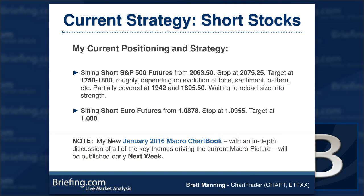Here's my current position: short S&P futures from 2063.50 in two entries following the Fed. My stop is back above 2075, and I'm waiting to reload. I've already taken a little bit off. I'm also sitting short the euro — the basis being that the Fed is not going to back off from their hawkish rhetoric even while this correction is going on. A lot of people think they will, and if I'm right, the market is mispricing the euro to the upside right now. We're looking to take advantage of that snapping back into place when somebody on the Fed makes clear the big policy objective is not necessarily equity market inflation right now. Early next week, my new macro chart book will be published to the page.